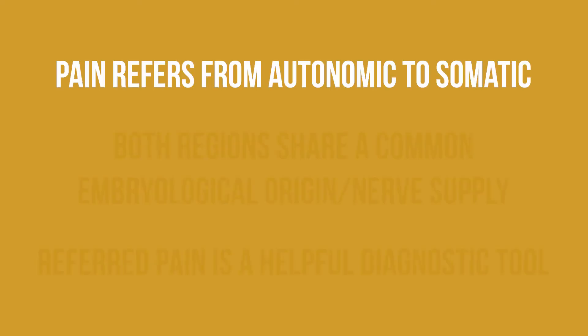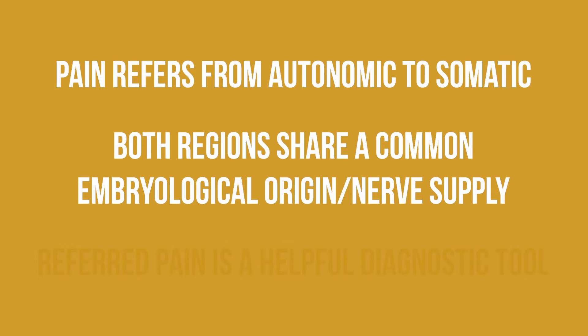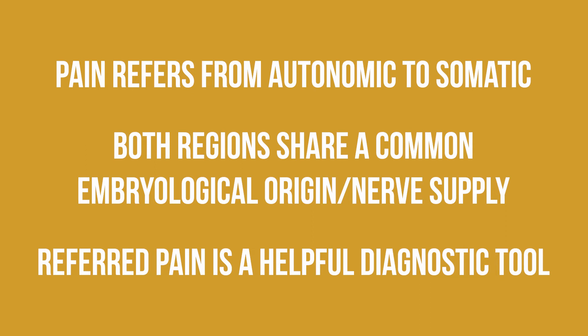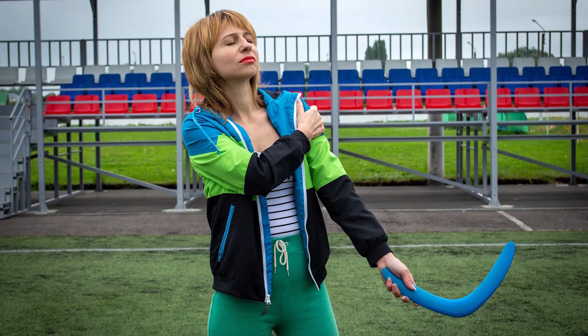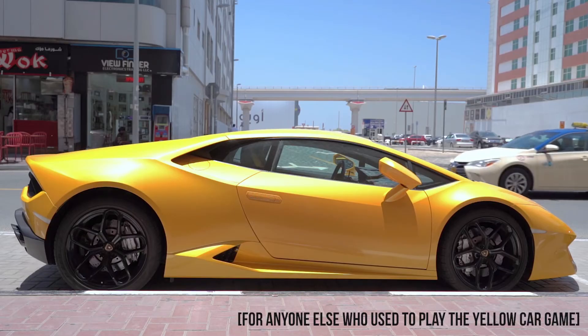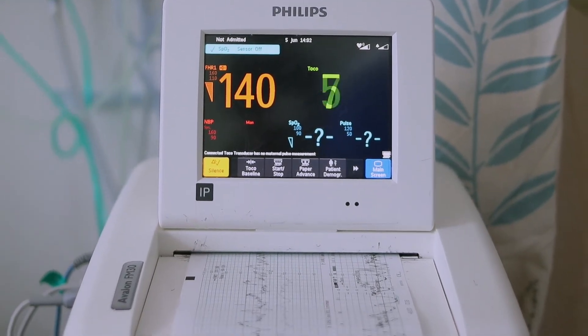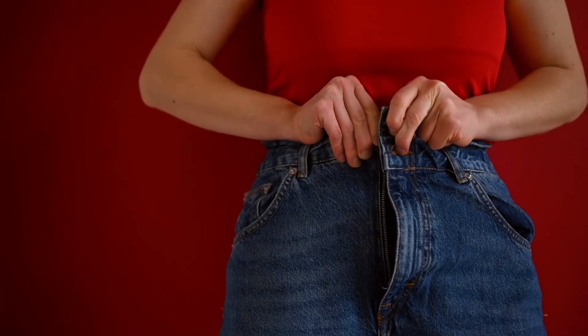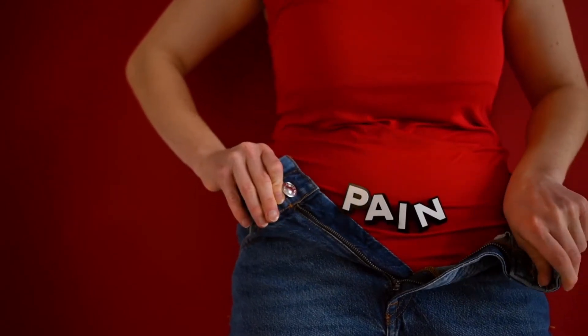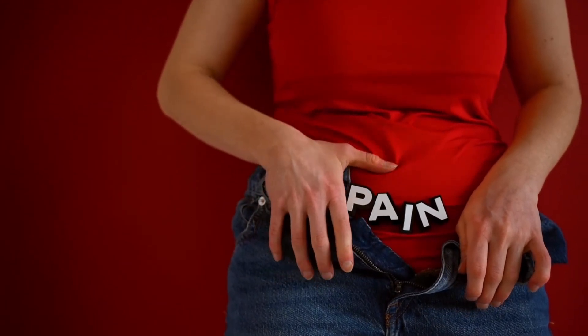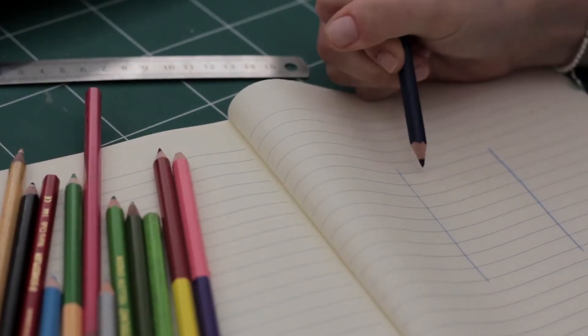Whatever the mechanism, there are some key points to remember about referred pain. First, pain originates in an autonomic region but refers to a somatic region. Second, these regions share a common embryological origin and a similar nerve supply. And third, knowing where pain refers to can be a vital diagnostic tool. For example, if a patient experiences pain in their left shoulder, it could be indicative of a problem with their heart. This can be particularly important in the abdomen, where problems with the viscera will present with clear patterns of referred pain. So with that in mind, let's draw out those patterns.